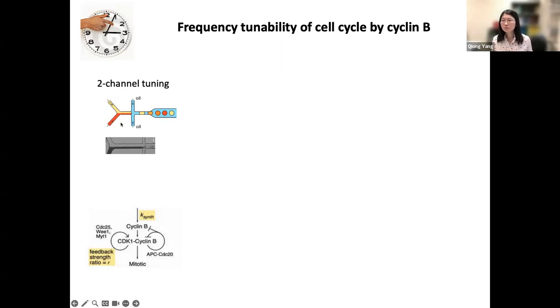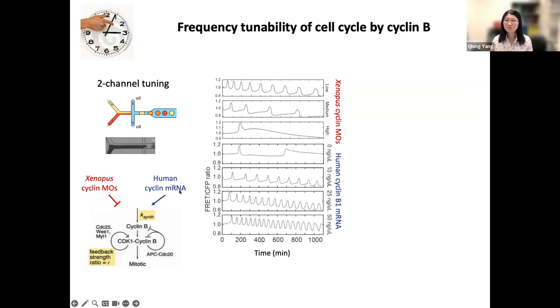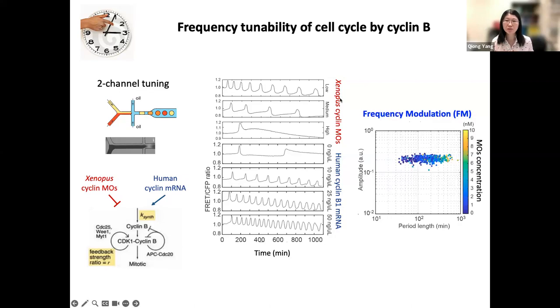We set up this two-channel tuning device. Before we create the droplets, we attach the water phase into two channels, and each channel attaches to a programmable pressure-driven system. With that, we could change the stoichiometry of the molecules in droplets in a continuous high-throughput manner. We first reduce the synthesis rate by adding Xenopus cyclin B morpholinos. We found that the more morpholinos we add, the cell cycle gets slower and slower and eventually arrests. If we add back the human cyclin B mRNA, which is not affected by Xenopus morpholinos, it can rescue the behavior, getting faster and faster. Because we can measure frequency and amplitude at the same time, we could create this amplitude versus frequency dependency. As you see, it's a widely tuned frequency, but amplitude is maintained in a narrow range, so this oscillator is frequency modulated in this setup.